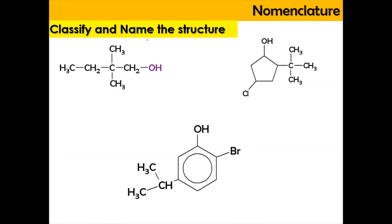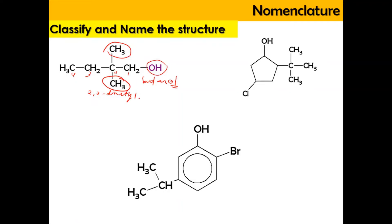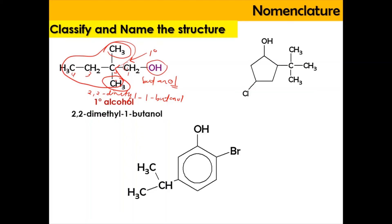Now we're going to classify and name the structures. For the first structure, the OH is attached to the alkyl group. We find the longest carbon chain: 1, 2, 3, 4 — so the parent chain is butanol. Numbering starts from the carbon attached to the hydroxyl group. At carbon number 2, there are two methyl groups, giving us 2,2-dimethyl. With OH at carbon 1, the full name is 2,2-dimethyl-1-butanol. This is a primary alcohol because the carbon attached to OH has one large alkyl group.